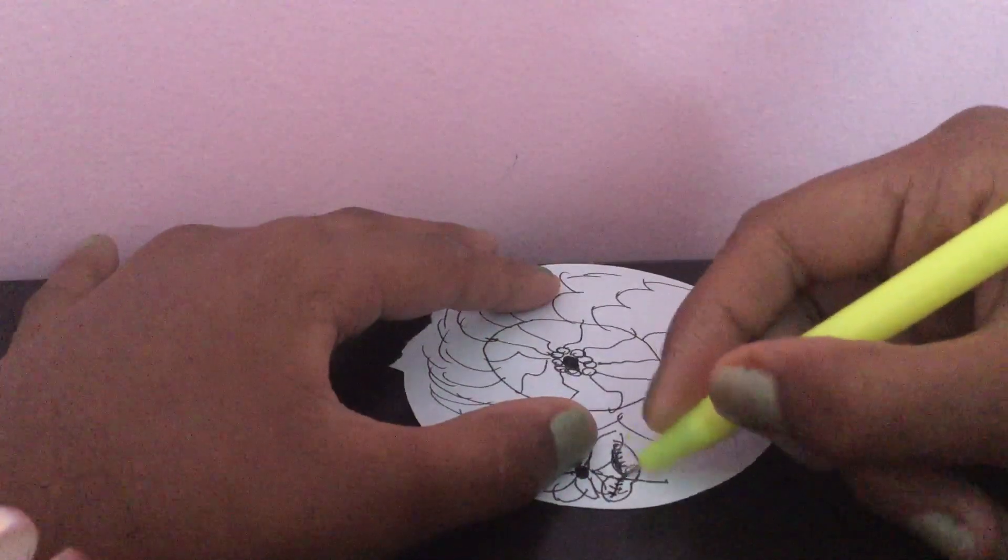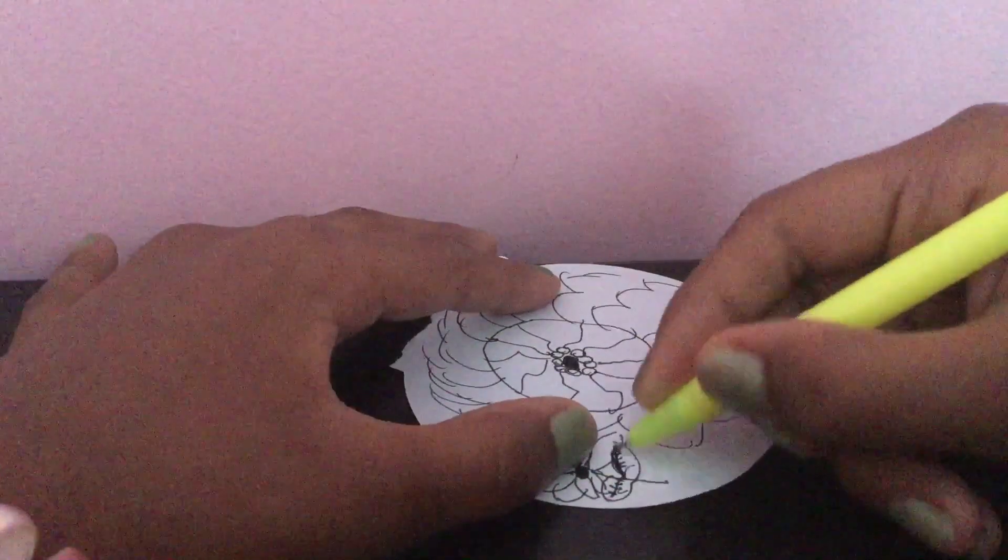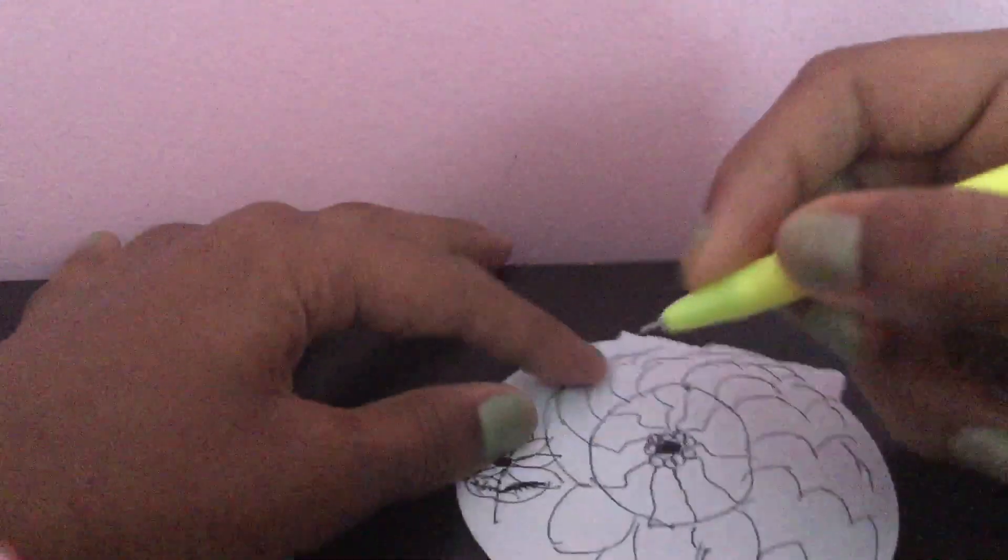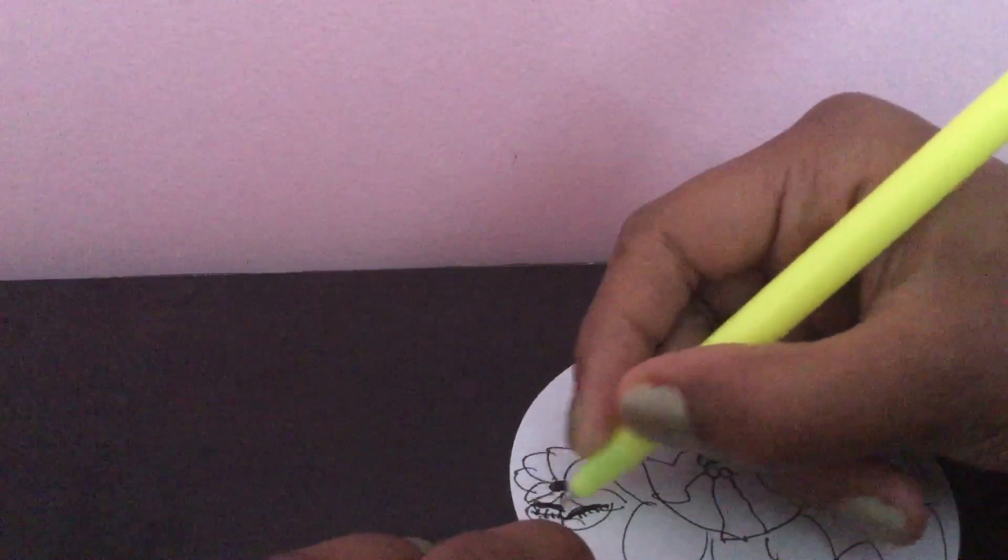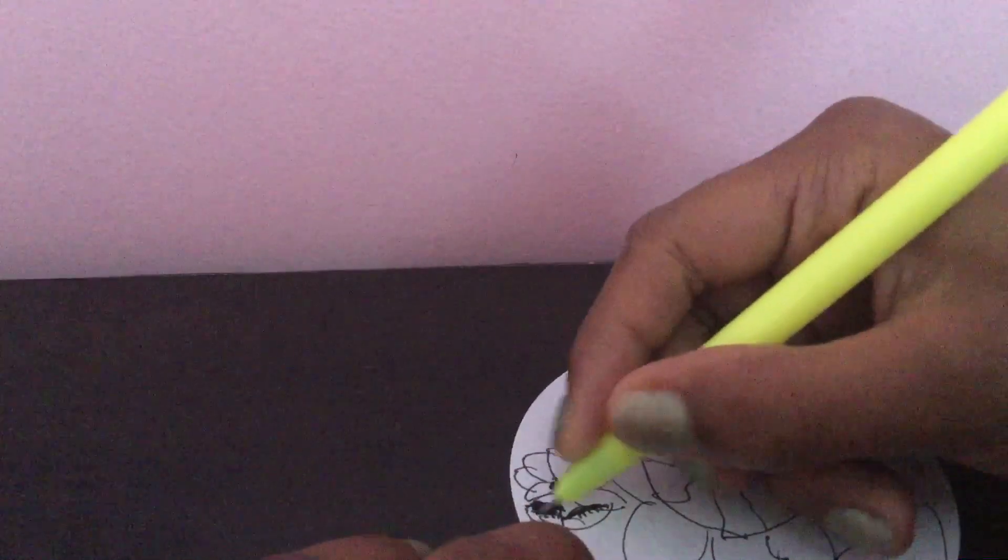But we could also decorate the leaf. So color half of the leaf and a little bit lines.